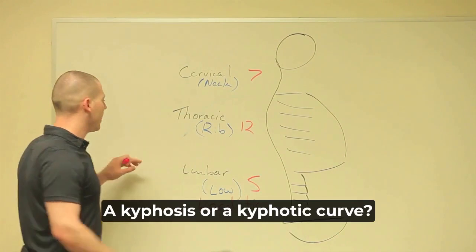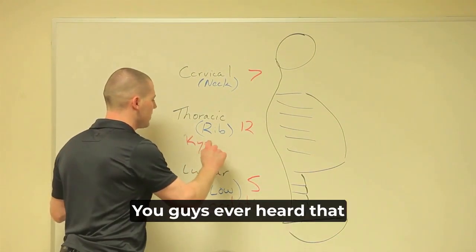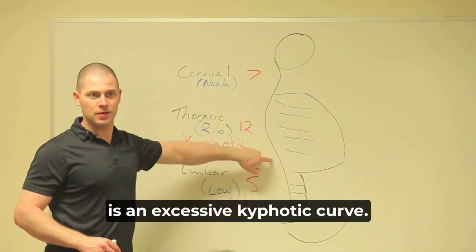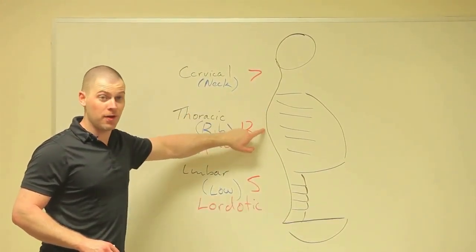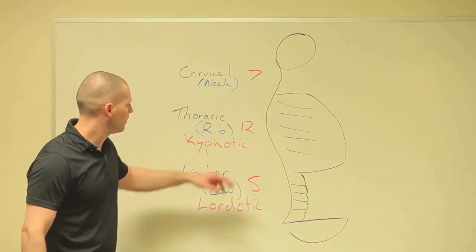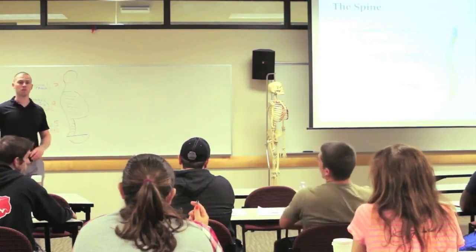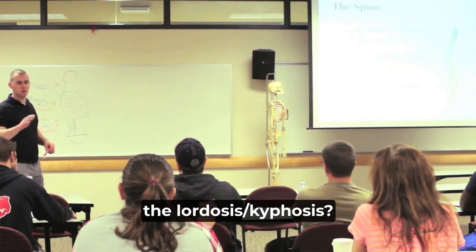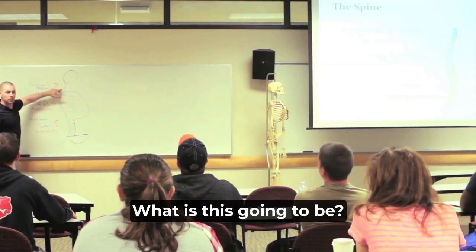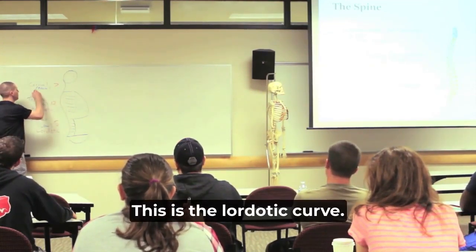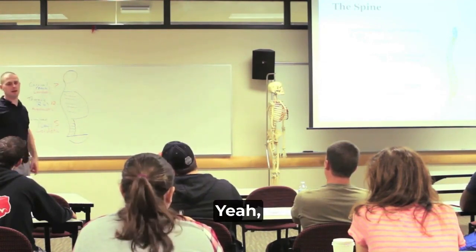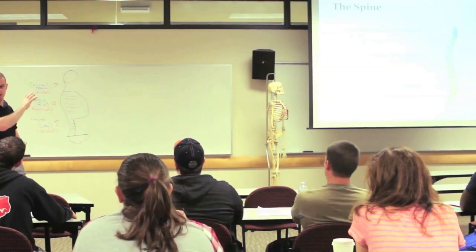I always make this letter association: my low back is my lumbar spine, which has a lordotic curve — L, L, L. Thoracic is what? A kyphosis, or kyphotic curve. You guys ever heard that term 'kyphosis'? All kyphosis is referring to is an excessive kyphotic curve — there's supposed to be a kyphotic curve there, it's just how much. Obviously this would be excessive. As for lordosis and kyphosis, it's just describing the curve. You guys are going to be tested on that.